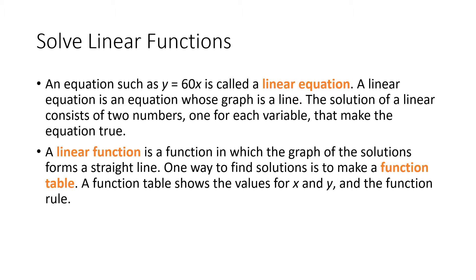An equation such as y equals 60 times x is called a linear equation. A linear equation is an equation whose graph is a line. The solution of a linear equation consists of two numbers that make the equation true. A linear function is different from a linear equation because it is a function in which the graph of the solutions forms a straight line. One way to find solutions is to make a function table, which shows the values for x and y in the function rule. Remember, we were able to play around with linear equations and turn them into functions — that's going to be important to what we do today.